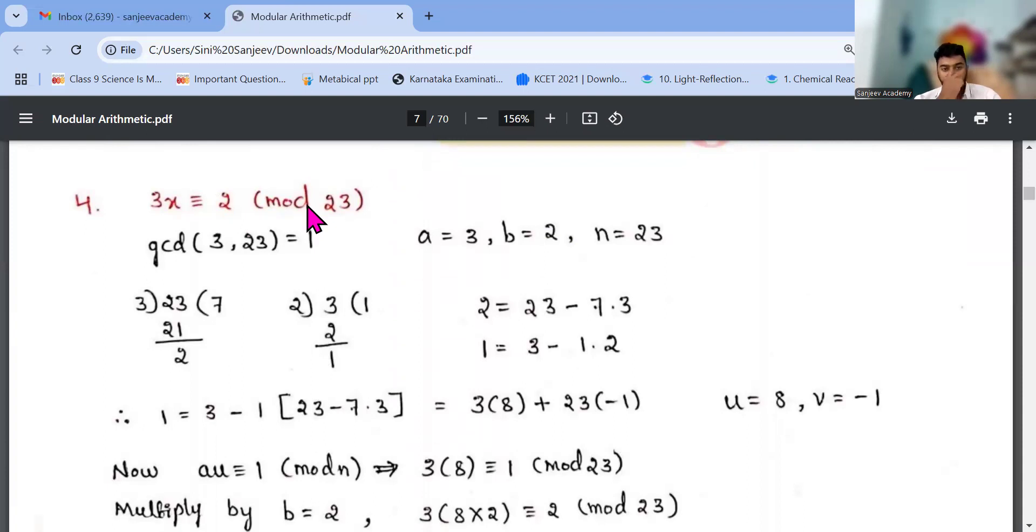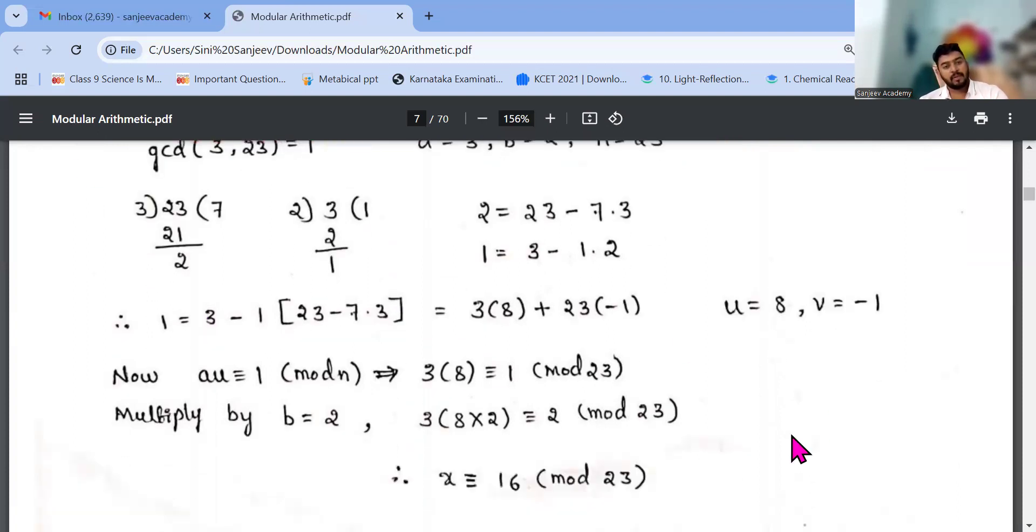3x congruent to 2 mod 23. gcd of 3, 23, you find it out. So obviously it is 1, coprime. Then do all the Euclid's division method, find u and v value. Then au congruent to 1. 3 into 8 congruent to 1 mod 23. Multiply b equals 2. 3 into 8 into 2, mod 23. x equals 16.